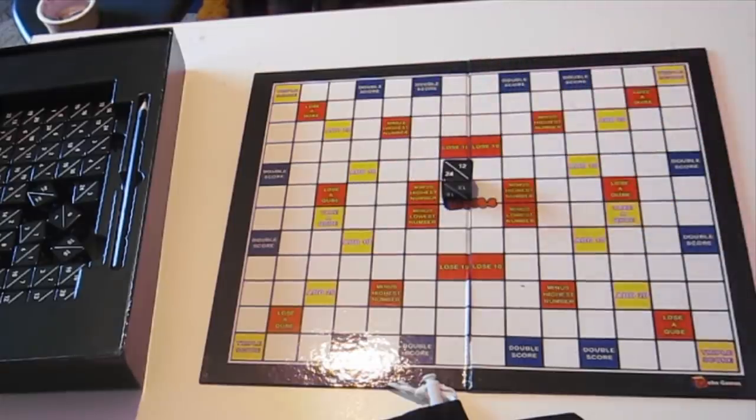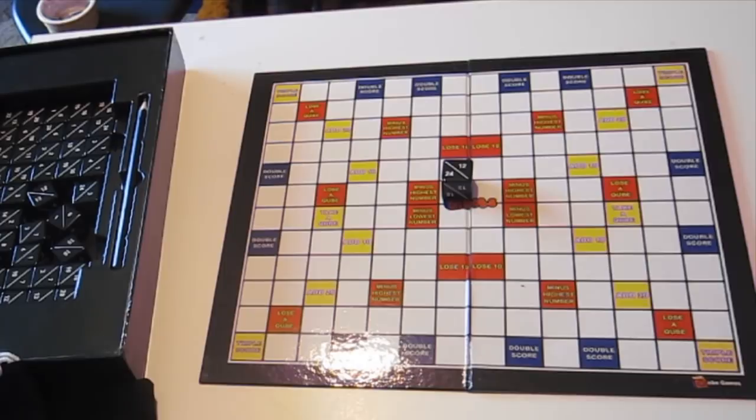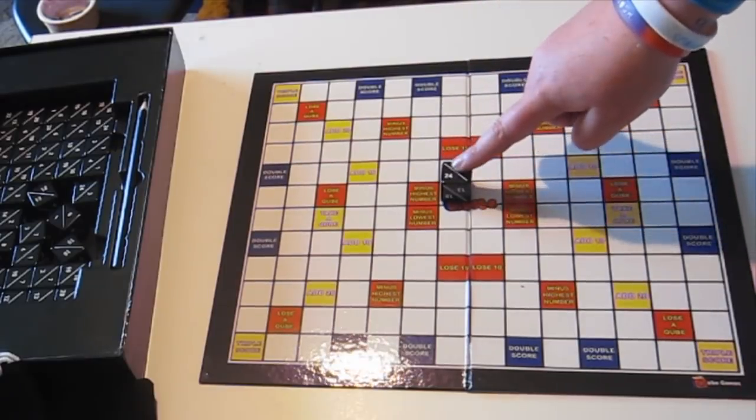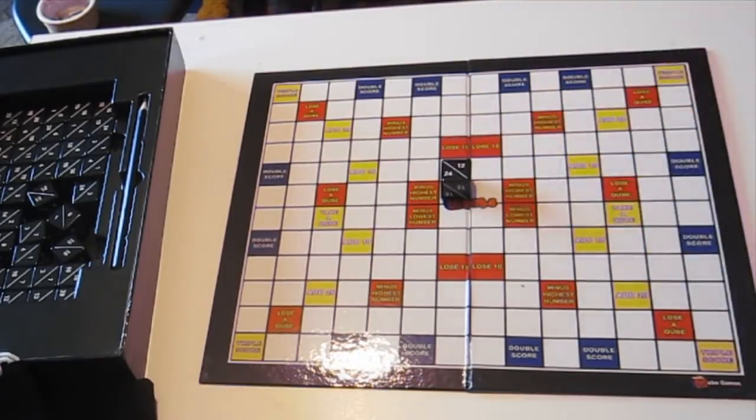I'm gonna place mine there. So basically play goes from the player to the left of the first player and continues clockwise. So for example, this player, you don't score any points on the first cube put down, that is always zero.